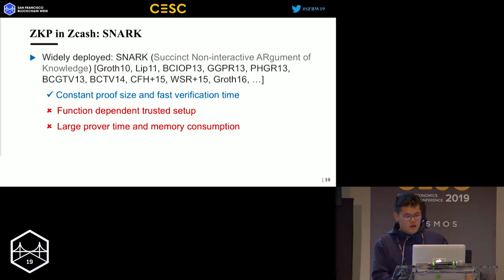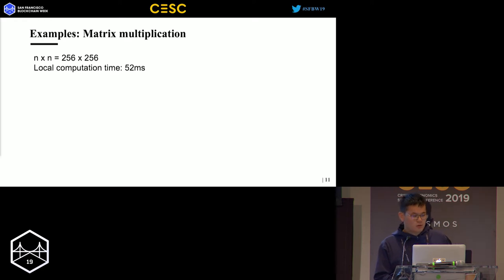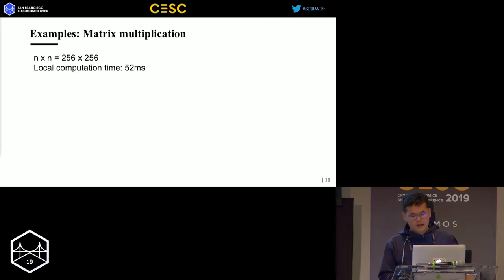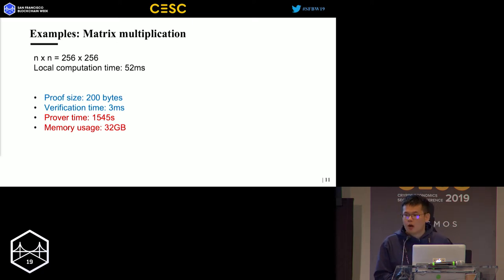The security will be broken in a trusted setup if the secret key is leaked. In addition, the prover time in SNARKs is very slow and the memory consumption is huge. For example, for matrix multiplication with matrix size 256×256, the local computation is only 52 milliseconds. But using SNARKs, the prover time is over 1,000 seconds and the memory usage is 32 GB.